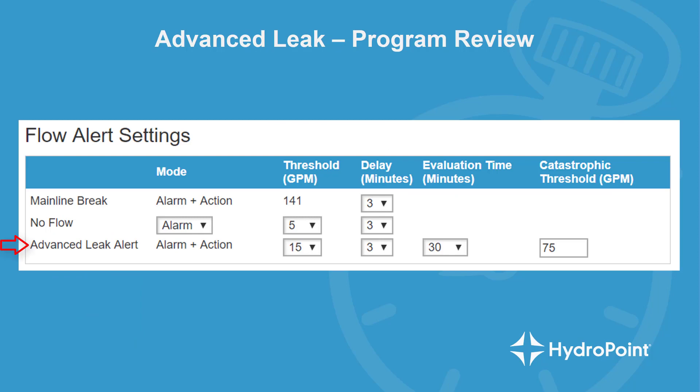When programming the advanced leak alert threshold, you're setting the minimum number of gallons you want your system to become aware of a leak condition. And when programming your evaluation time, you're setting the duration of an allowable leak event.